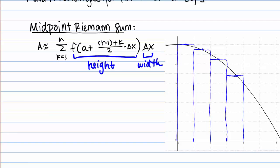We've got the sum from k equals 1 to n, so we're summing over n rectangles, f of all of this stuff. As a whole, this is just giving the height of each rectangle. The k minus 1 plus k over 2 part might look a little strange, but remember this is a midpoint — that's just finding the midpoint of each rectangle. Then we've got our delta x, which is the width of each rectangle. Essentially, we're just multiplying height times width for every rectangle and adding all those things up.